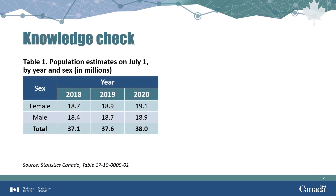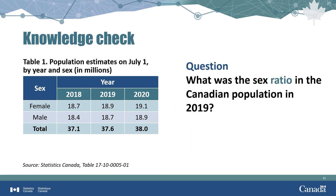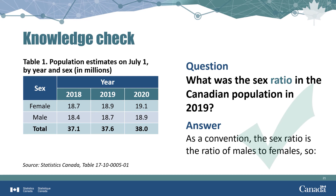Now calculate the sex ratio — the ratio of males to females — in the Canadian population in 2019. The ratio is 18.7 million males to 18.9 million females, which sounds confusing. Expressing it as a decimal by dividing males by females gives 0.99 — there were 0.99 males for every female. This tells us there were fewer males than females, and since the ratio is close to 1, the gap is small.